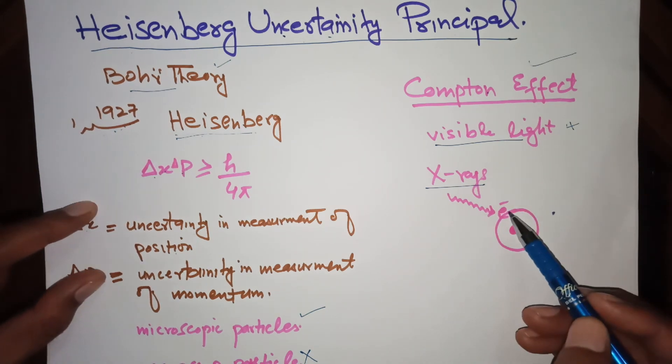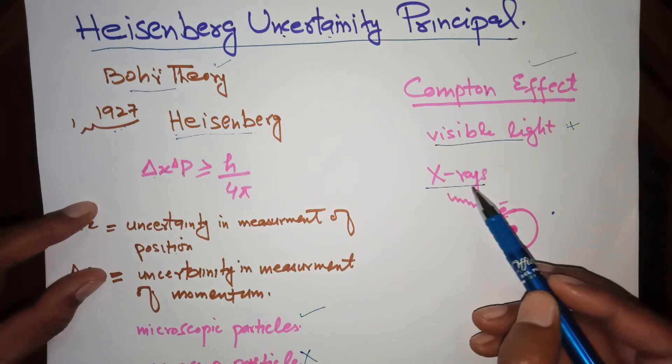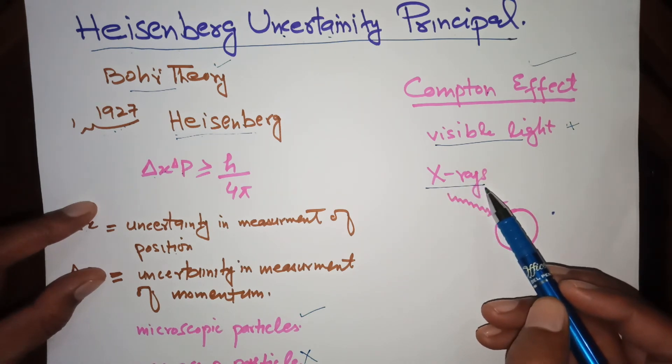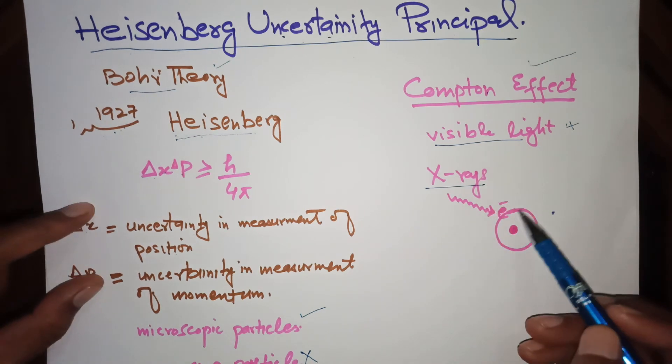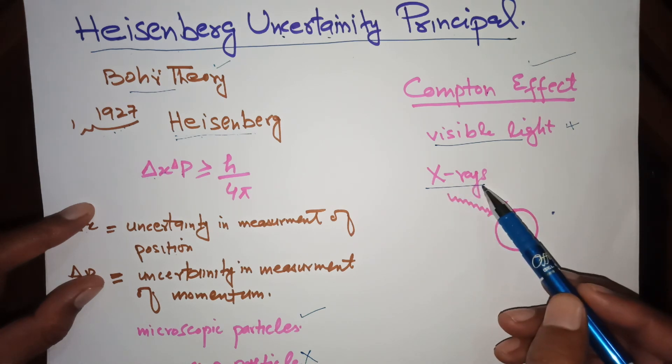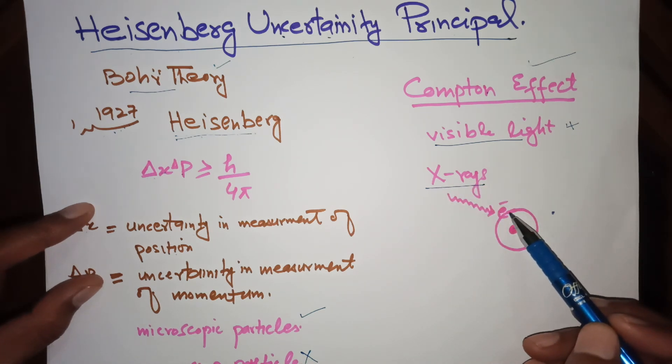So if we want to avoid the change in momentum, we have to use X-rays of greater wavelength. So if we find the momentum of electron accurately, then its position will not be accurately determined.